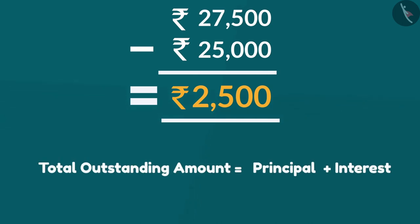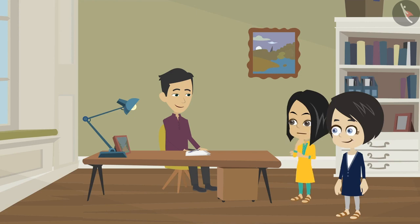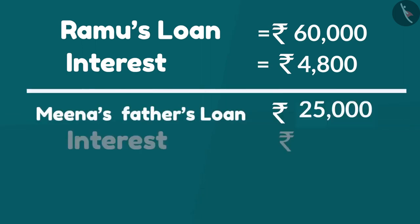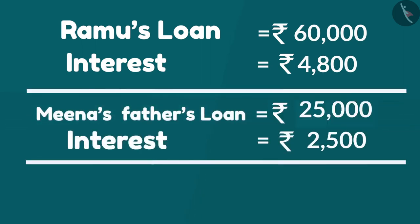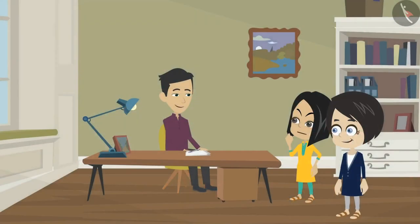Okay uncle, I was thinking the bank will take more amount than principal from us. But dad, your interest on loan is 4,800 rupees and their interest on loan is only 2,500 rupees. Why do we need to pay more interest?